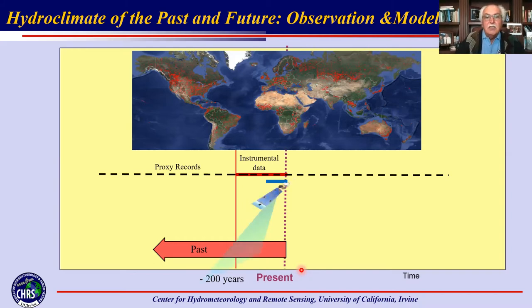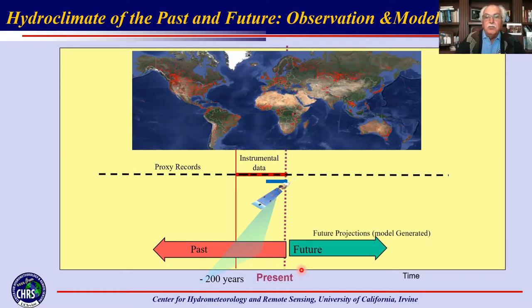When it comes to satellites, it's been only about 50 years that we have been benefiting from them to make observations of our planet. All of that knowledge we learn from, we try to put to good use and develop models — climate models, hydrologic models, and many different types used for prediction from short-term floods all the way to climate scales of decades to centennials.